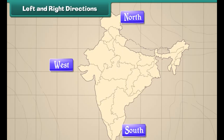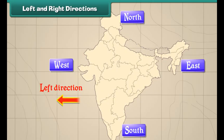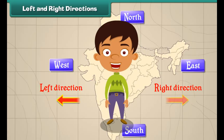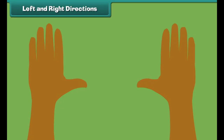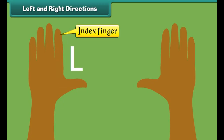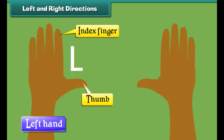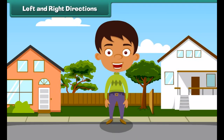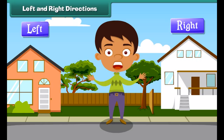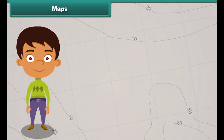In addition to north, south, west and east, we also use left and right directions to locate a place. We use our hands to indicate the left and right directions. The hand that makes the letter L when the index finger and thumb are stretched out is our left hand, and the other one is our right hand. The places towards our right hand are said to be on the right and those towards our left hand are said to be on the left.